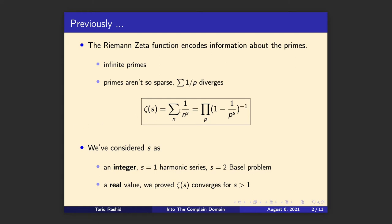You can see it reproduced here. The sum of 1 over n to the s, where s is a parameter, summed over all integers, equals an infinite product of (1 minus 1 over p to the s) inverted, taken over all primes. So this side is about integers and this side is about primes. This is called the Riemann zeta function, and we know it encodes information about the primes. Manipulating it reveals things like the infinite number of primes, or that the prime harmonic series diverges — and these pop out of this magic Euler product formula, this Golden Bridge.